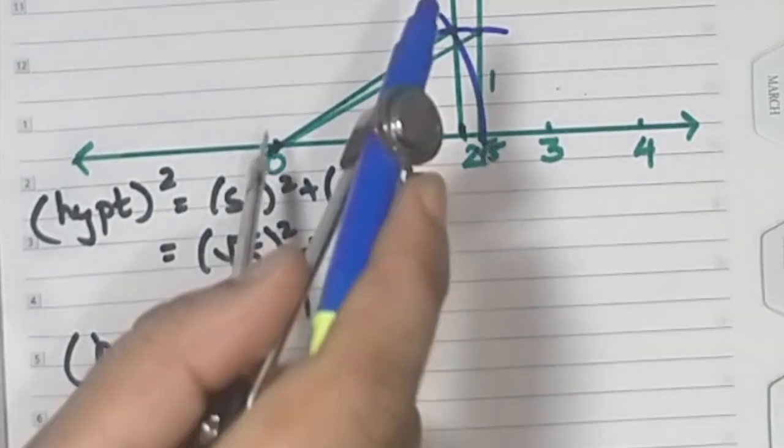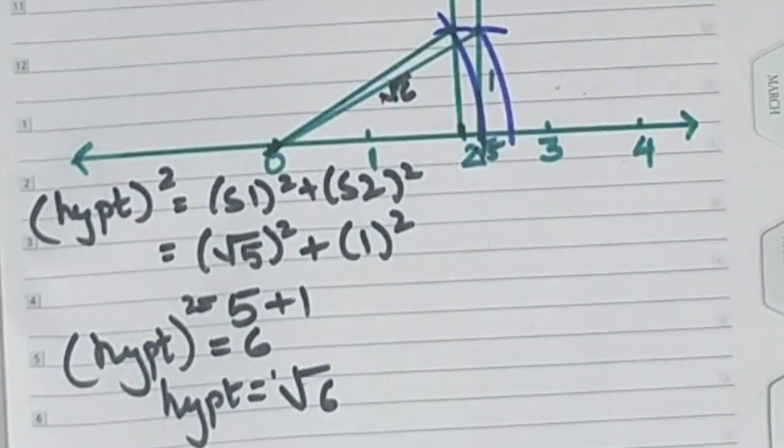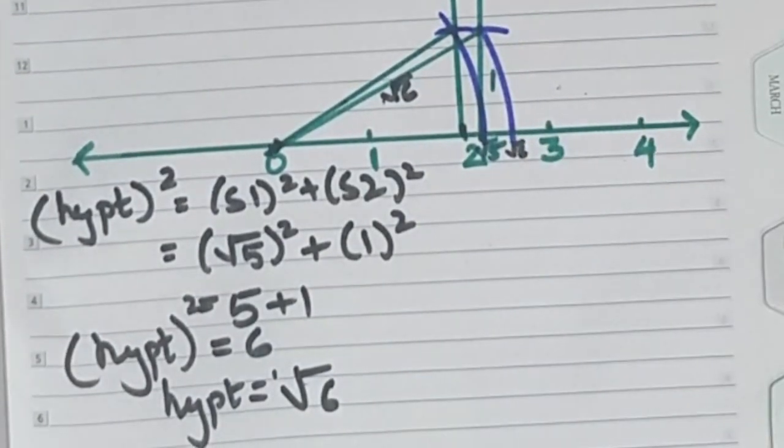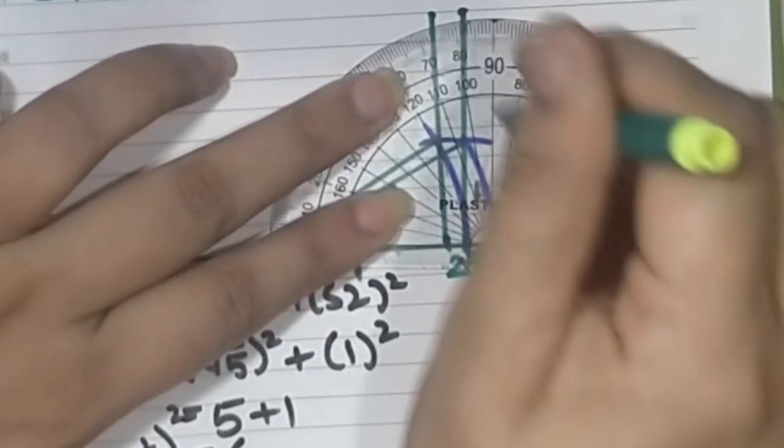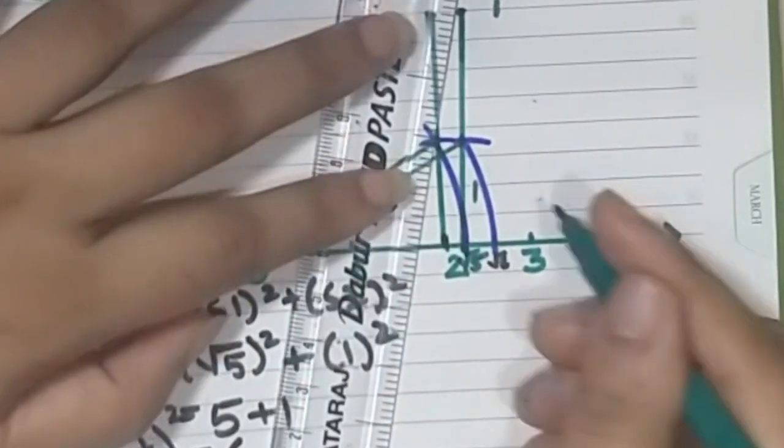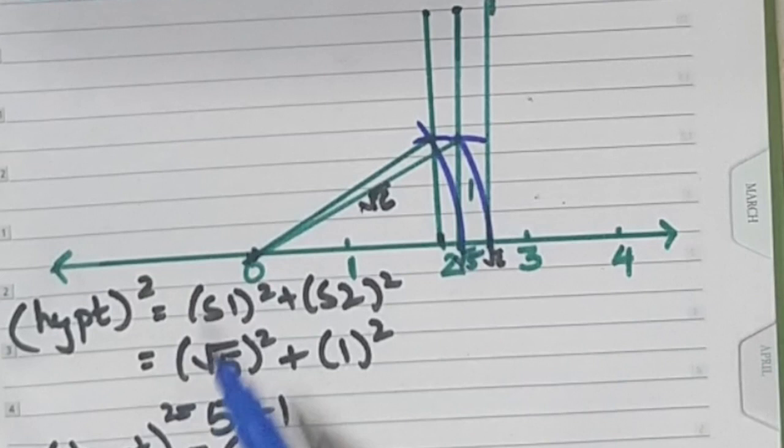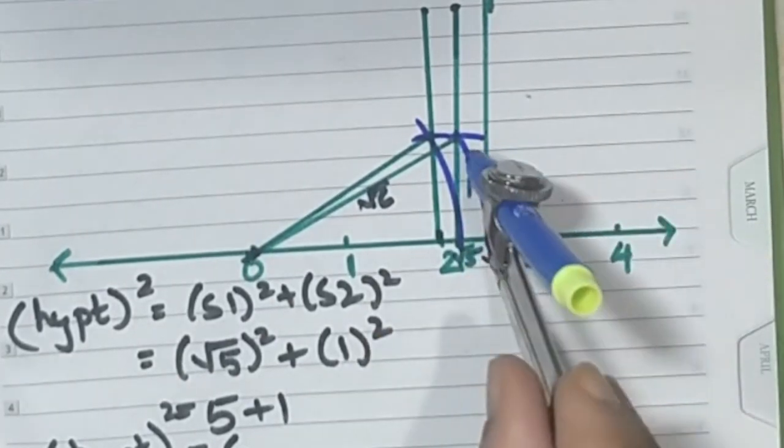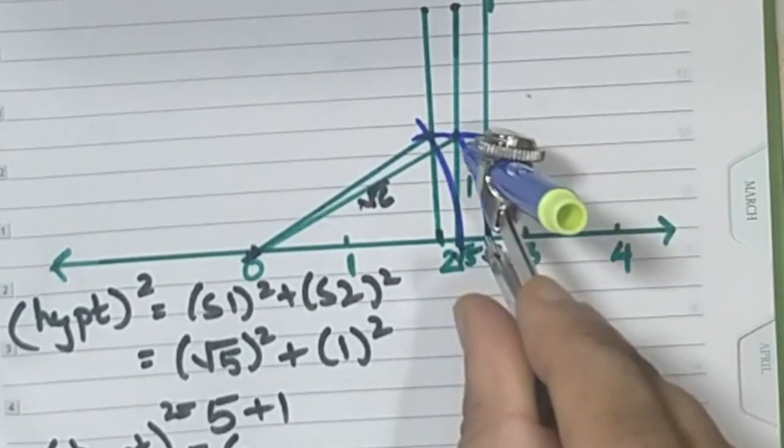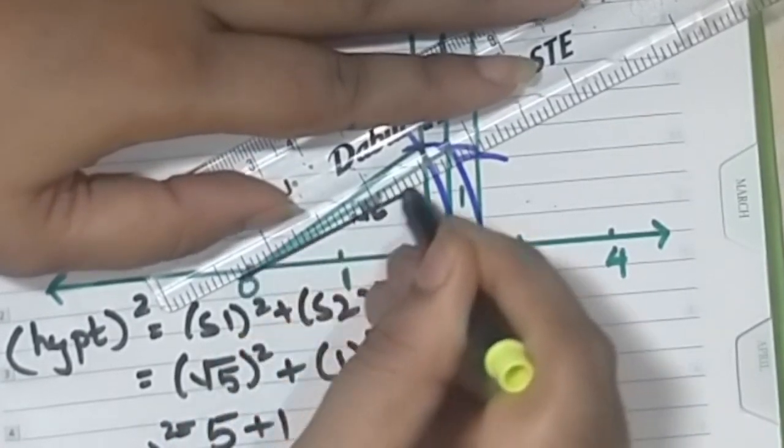Now for root 6 what you have to do is plot root 6. This is root 6. At root 6, we have to again take 90 degrees to plot root 7. At root 6, we will draw a line. Again, a distance of 1 unit. Join. I'll use black marker now.